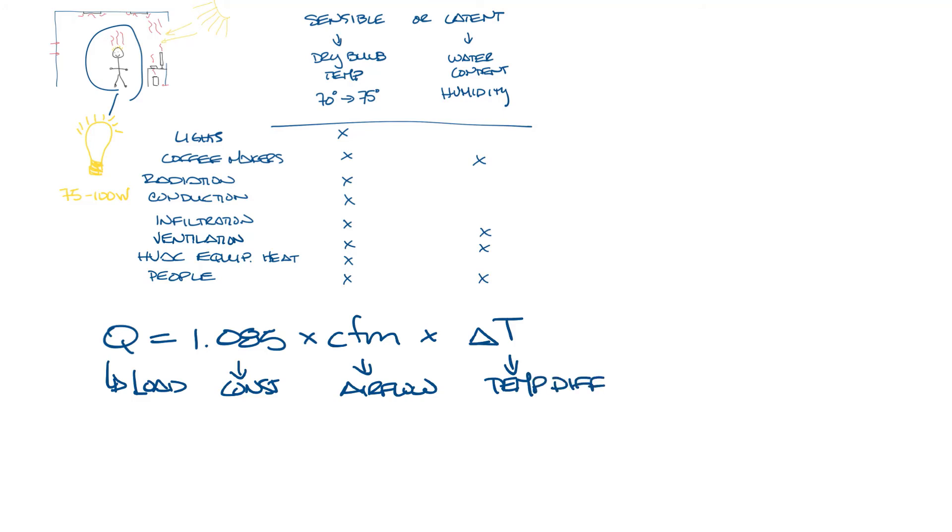Once you add up your loads, you can calculate how much airflow you need. So from your load equation, you know that CFM equals Q divided by 1.085 times delta T.